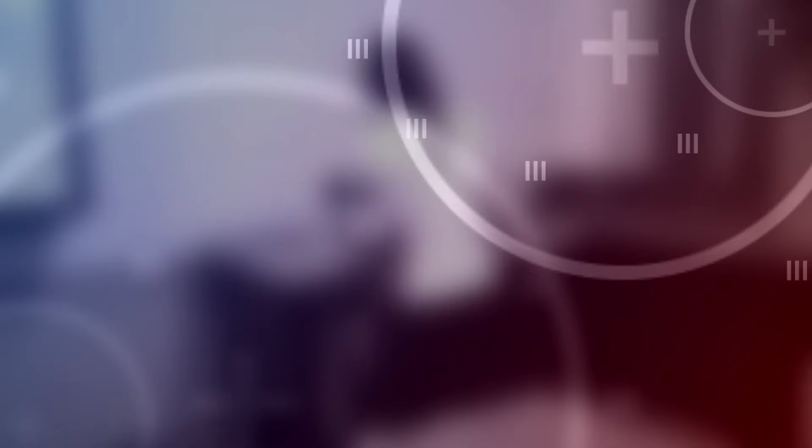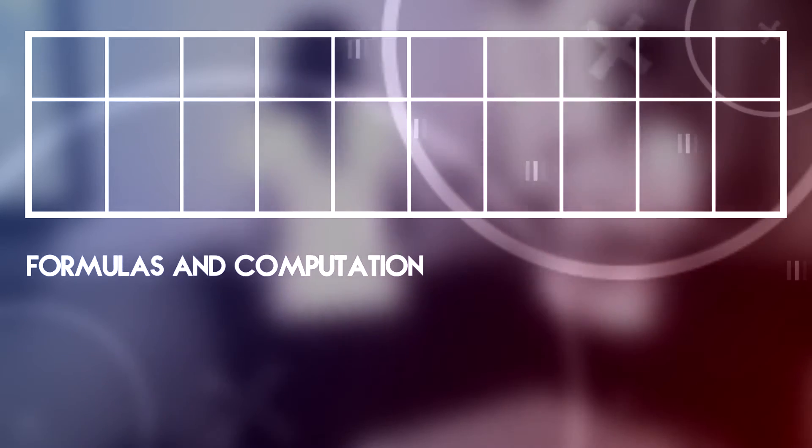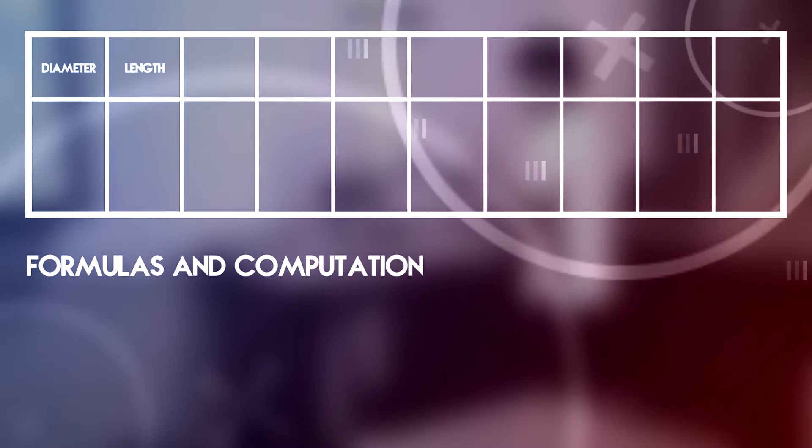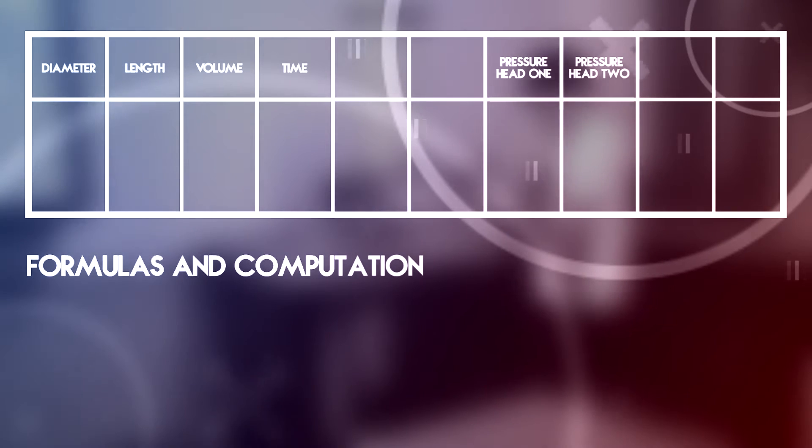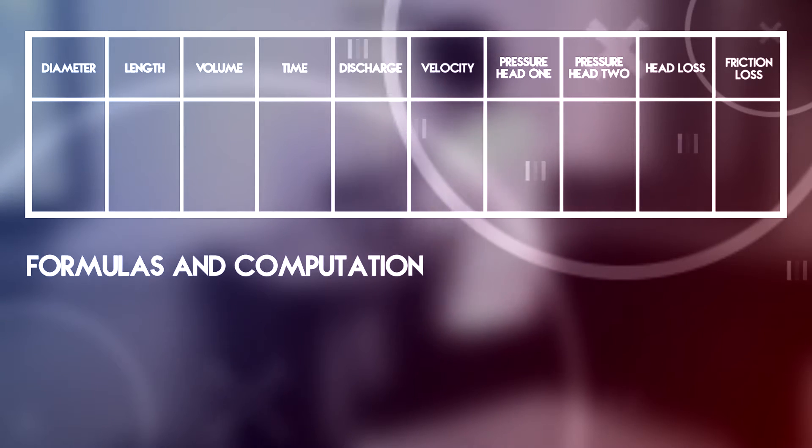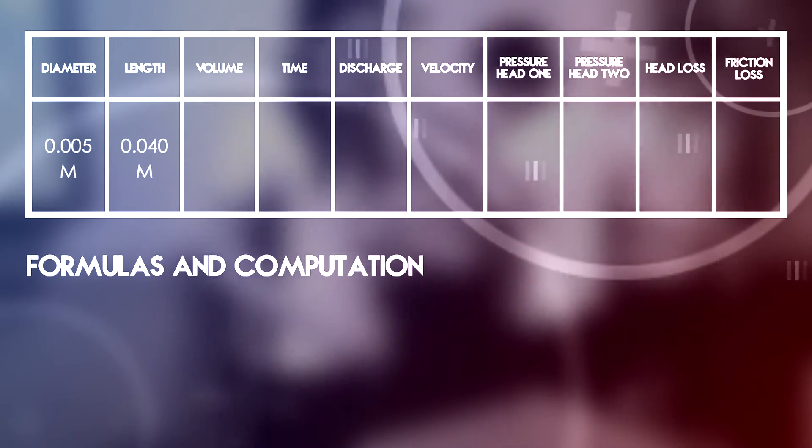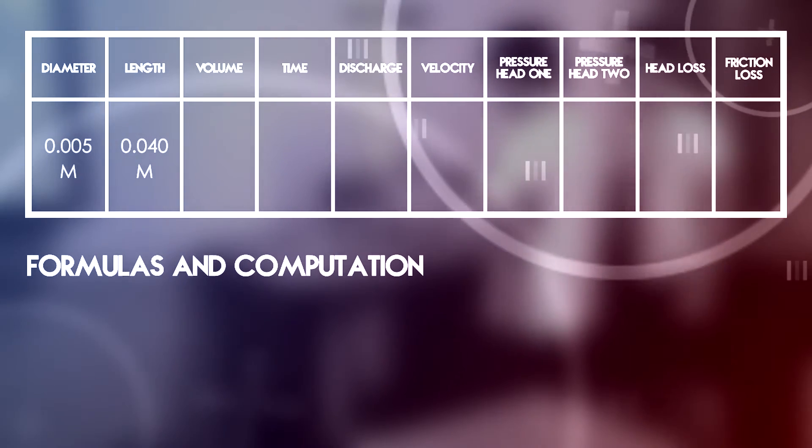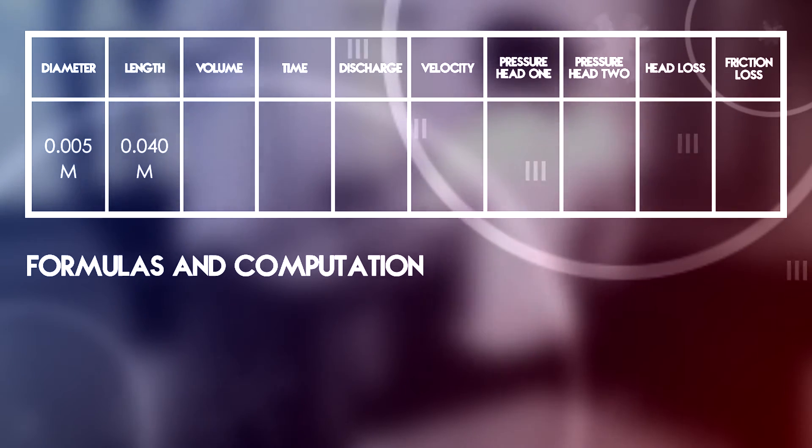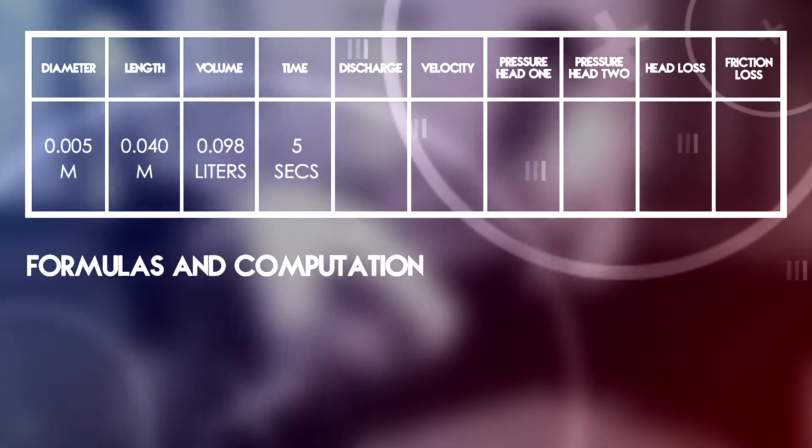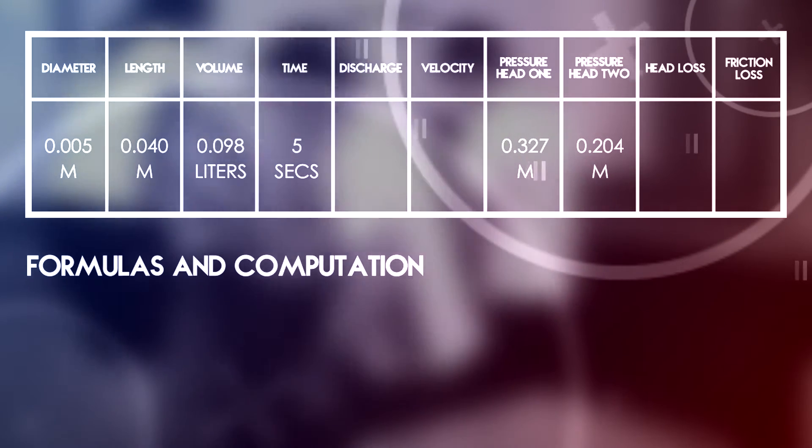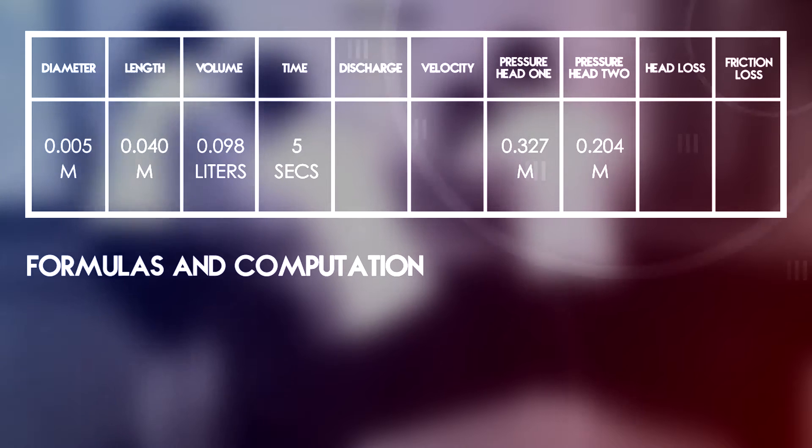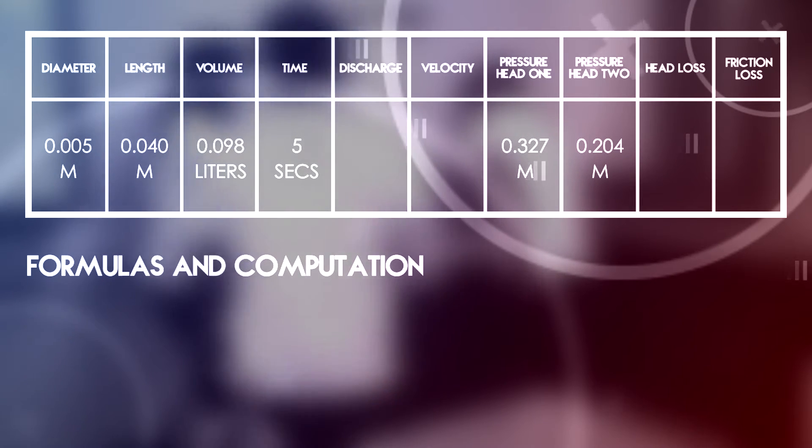Data and results. Two datas are given which are the diameter of the pipe and the length. Four datas are obtained, namely volume, time, and two pressure heads H1 and H2. For trial 1, a pipe with 0.005 meters of diameter and 0.40 meters of length was used. For 5 seconds, the volume collected is 0.098 liters and the reading for H1 is 0.327 meters and 0.204 meters for H2.